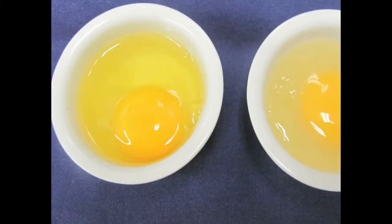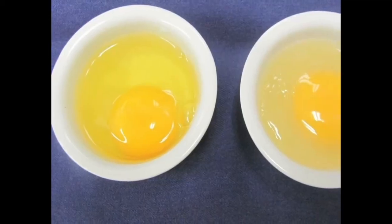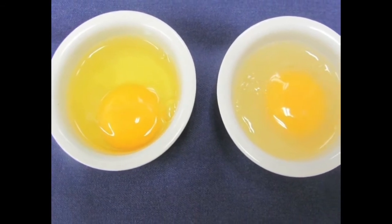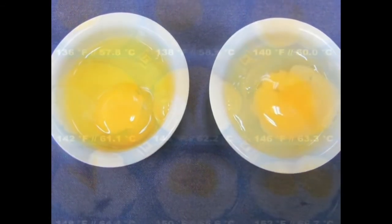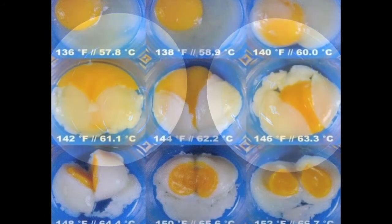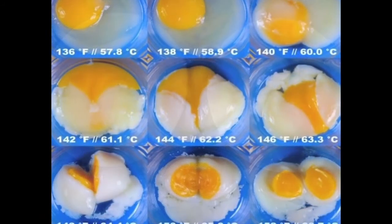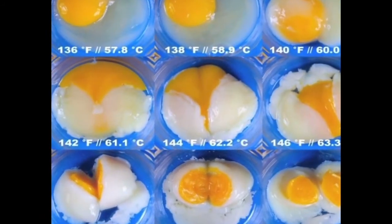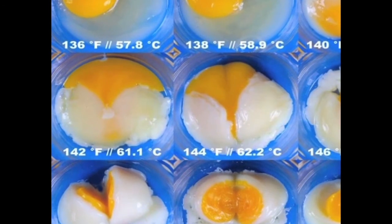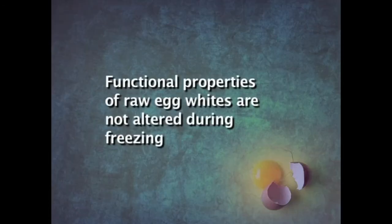When the egg is pasteurized - that is heated at 60 to 62 degrees centigrade for 3 and a half minutes - all the salmonella organisms are destroyed. So it can be safely stored for a very long period of time. The functional properties of raw egg whites are not altered during freezing.